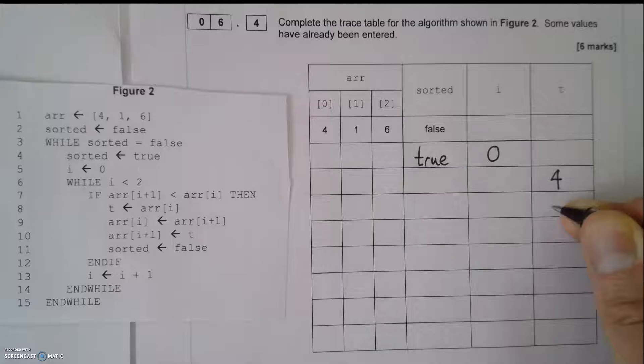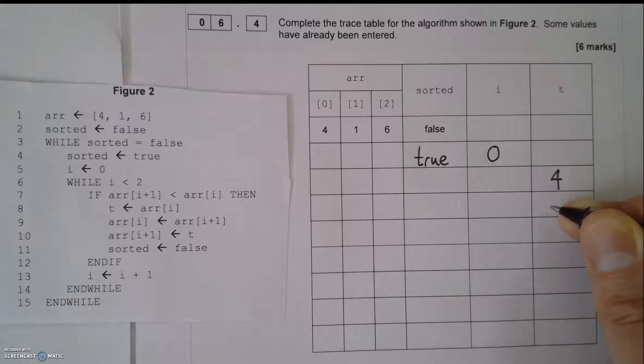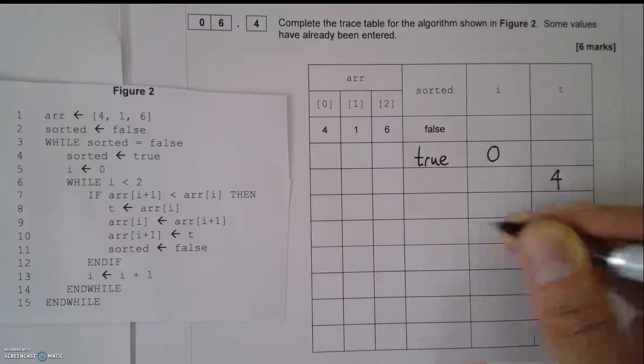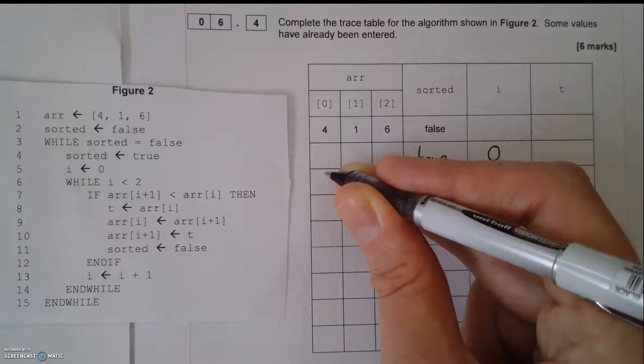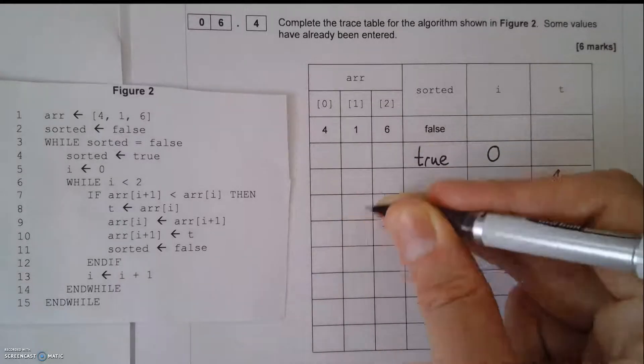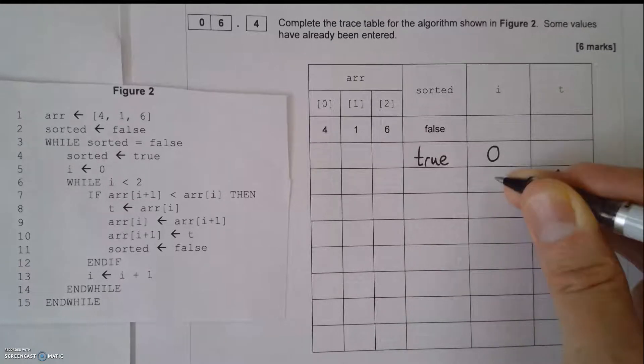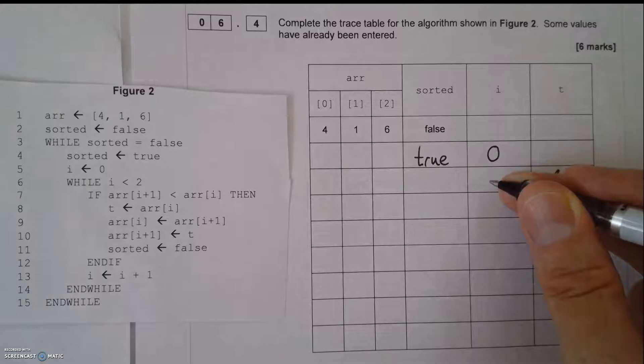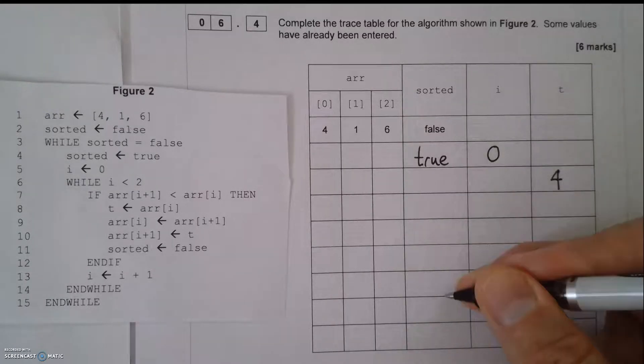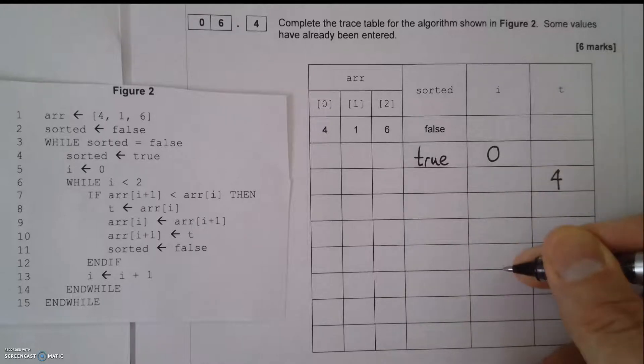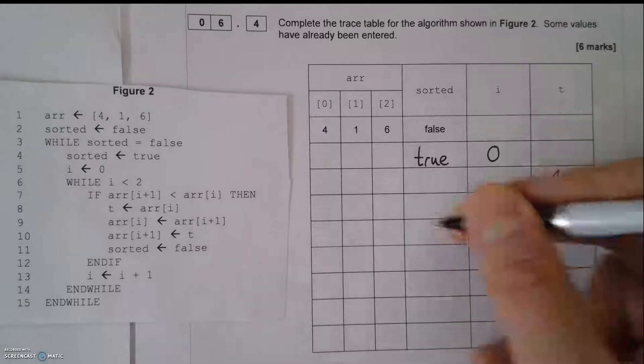The way you're going to be marked for this - 6 marks, how does that break down? You could easily just say it's per column. 1, 2, 3, 4, 5, 6. So really, try and put it on the right line. But as long as you've got the correct values in each column, you're going to get a mark for that.